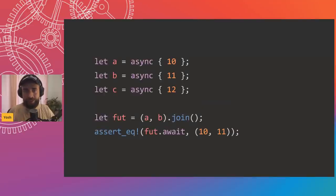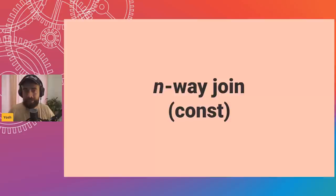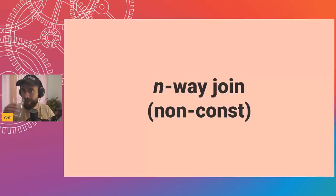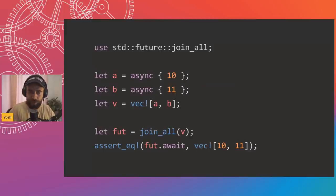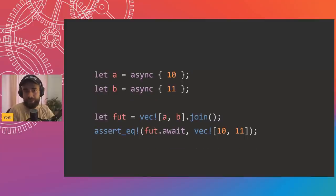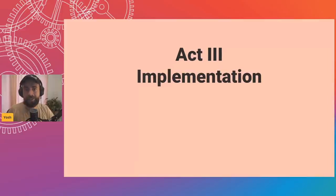For a three-way join, you just do (a, b, c).join() and get back (10, 11, 12). You can keep expanding — 15 futures, just join them all manually and it works. This works with tuples but also with arrays. For runtime-sized collections — types whose size we don't know at compile time — instead of join_all, you just put futures in a Vec and call .join() on the Vec and get a new Vec back.